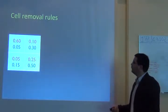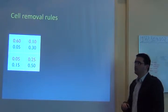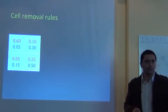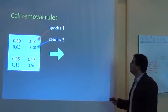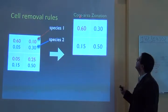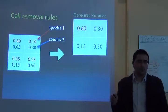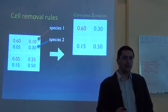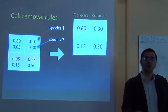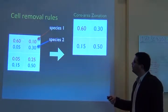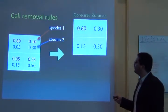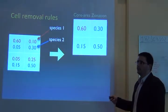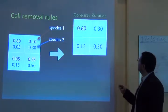Suppose now we have two species. These are the relative contributions of each species to the whole system — species one and species two. If we're using core area zonation, it uses the highest value: whichever species the cell is most important for. In this case, the cell is much more important for species one, so that's the value used to calculate marginal loss. In another cell, if it's more important for species two, then that's the value used.